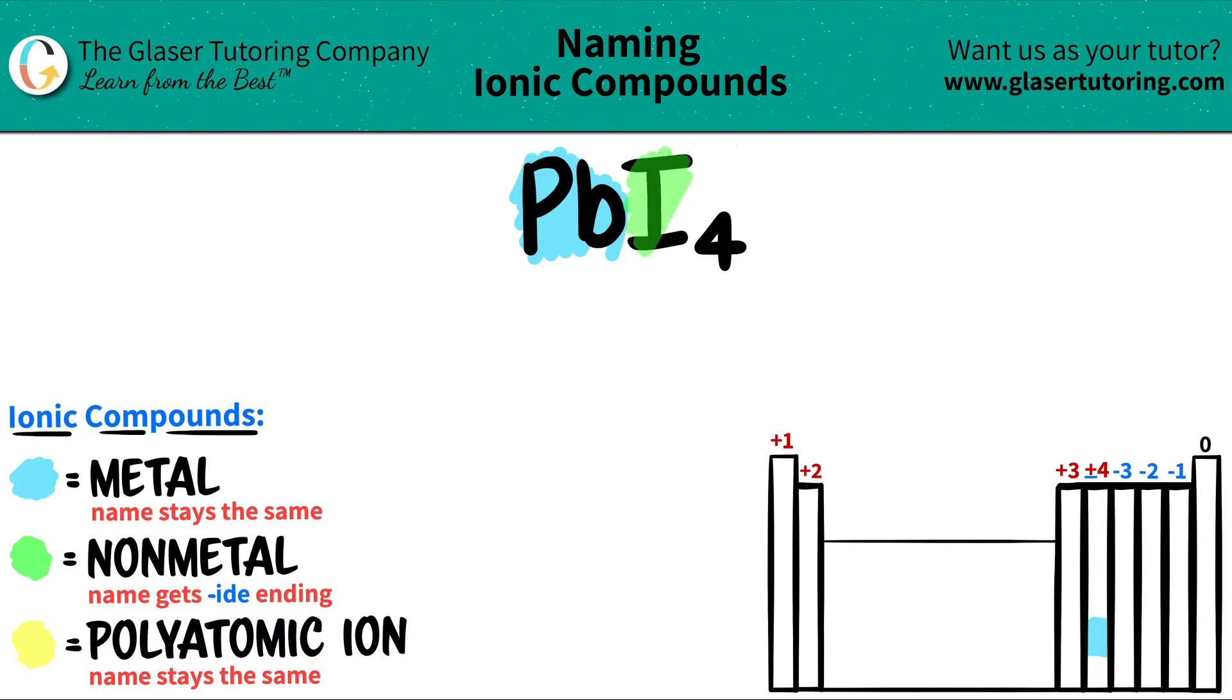And iodine is a non-metal because it's a halogen. It's in group 7A or 17. It's in this group right here. So that's non-metal territory.